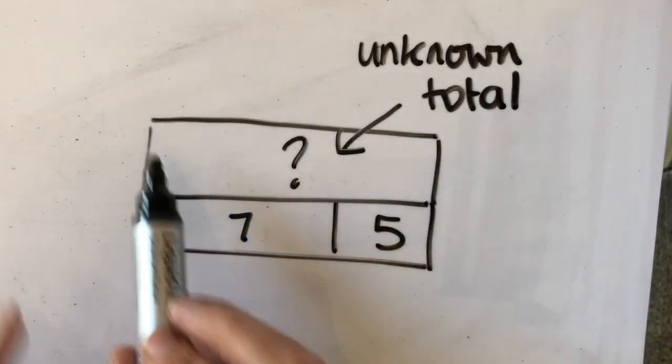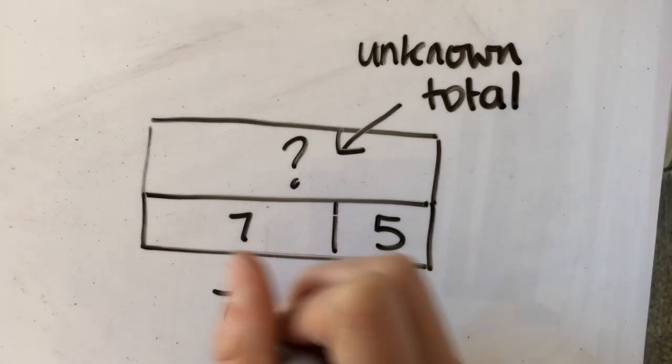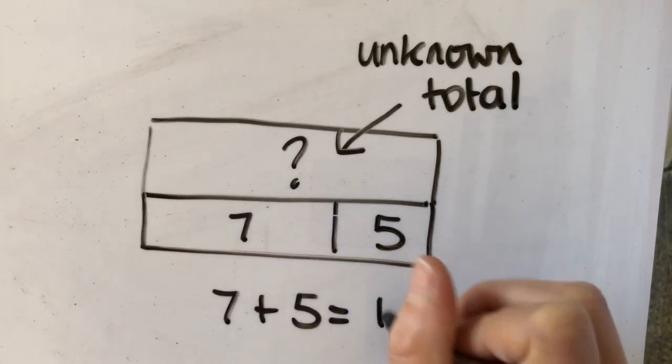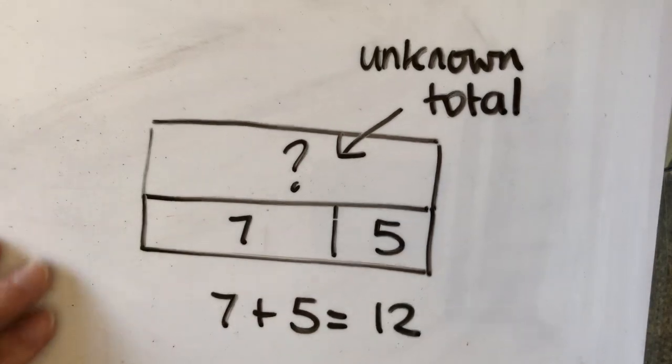This is my unknown and it's my unknown total because I don't know what that number is. I can therefore, because that's my total, my whole, I can add up 7 and 5 and I can get 12 and therefore know my total.